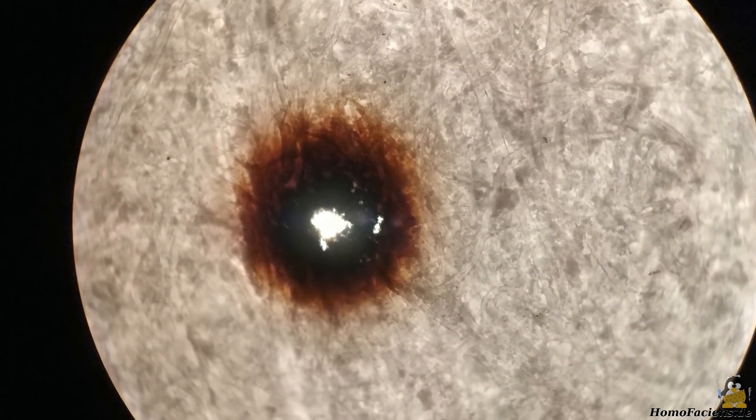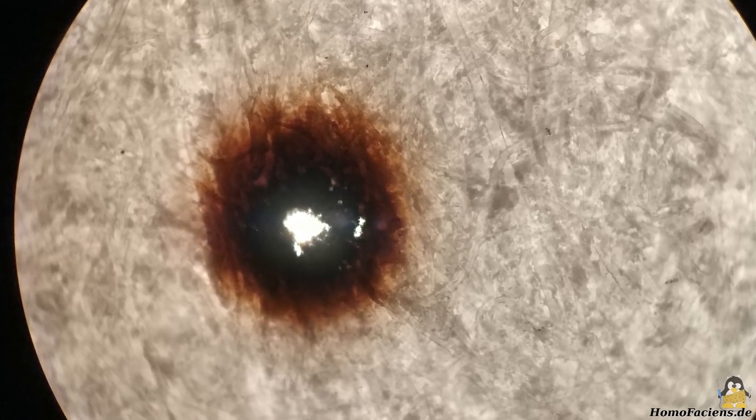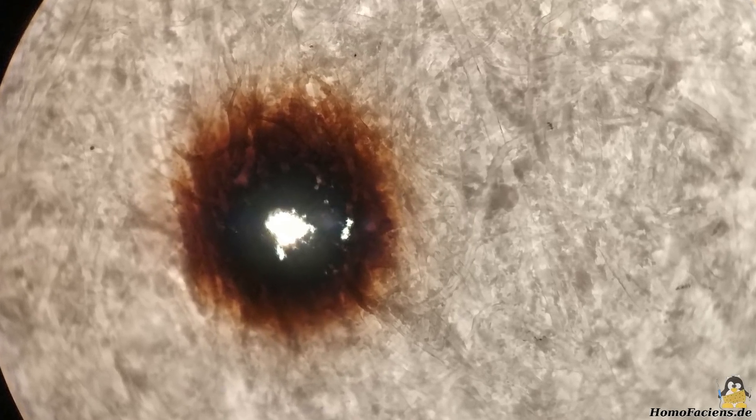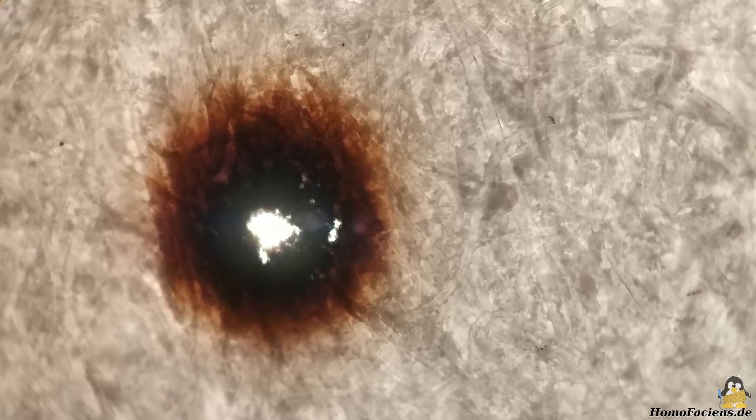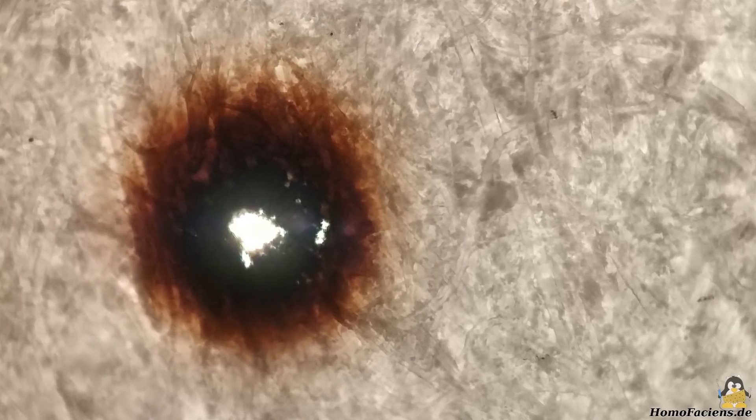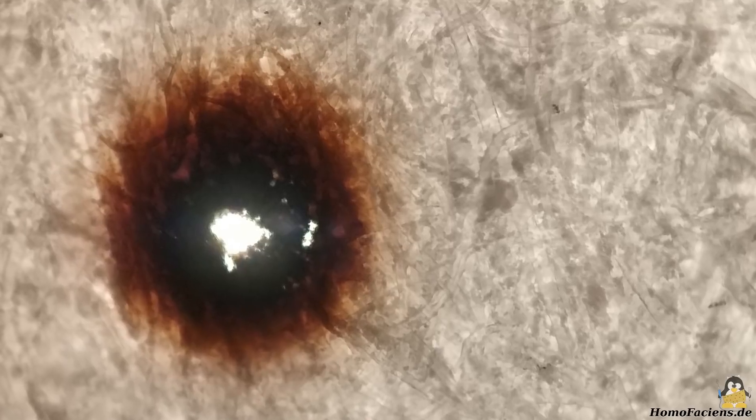With a microscope, the reason for this becomes clear. Paper consists of many small randomly distributed fibers that offer a wide variety of routes through this jungle for the flow of electricity.